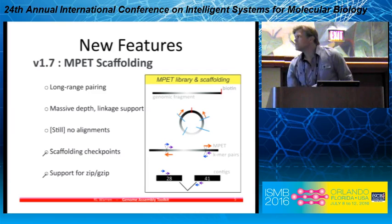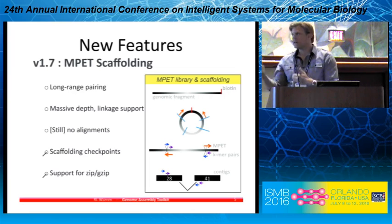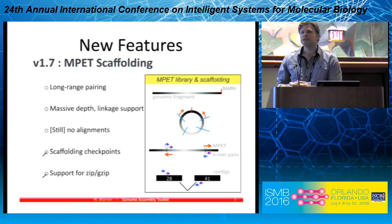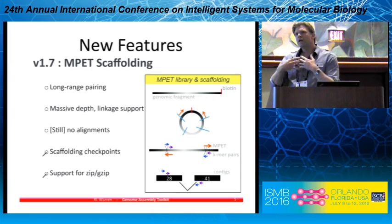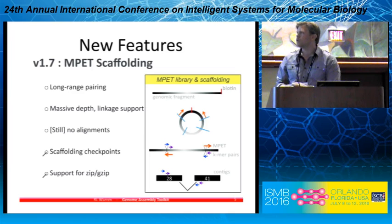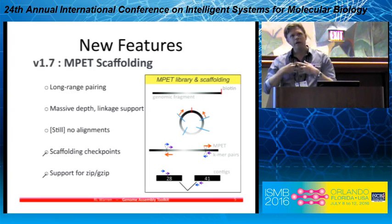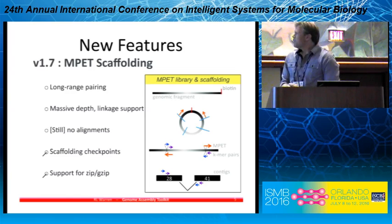Another new feature of Lynx is the possibility to scaffold with MPET. MPET are long-range jumping libraries, some of which are 20 kb in distances. You can exploit the massive depth provided by MPET sequences — still no alignments. The format is very similar to what is input in the Saki assembler to extract k-mer pairs between the MPET pairs. This feature also implements scaffolding checkpoints, which is very useful for testing different hypotheses, different linkages, thresholds between contigs, and also supports compressed files.